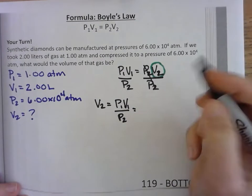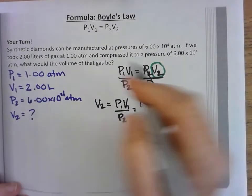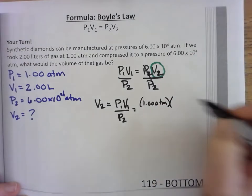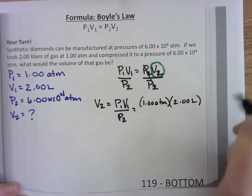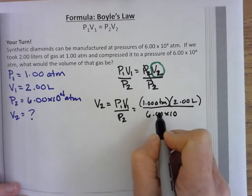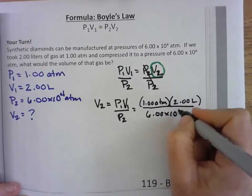And all I have to do is plug in: P1, 1.00 atm, times V1, 2.00 liters, over my new pressure, 6.00 times 10 to the 4 atm.